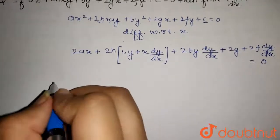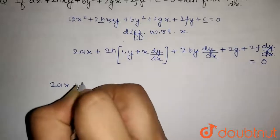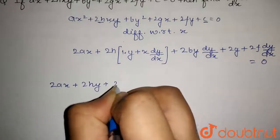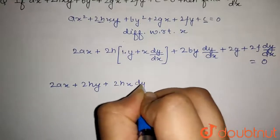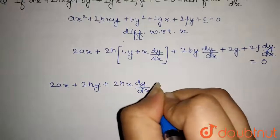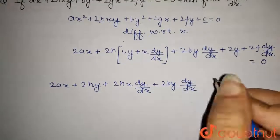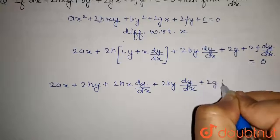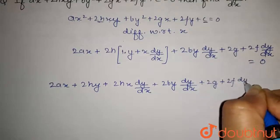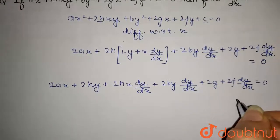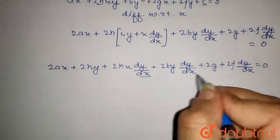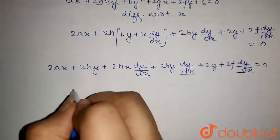When simplifying this expression, we get 2ax plus 2hy plus 2hx dy by dx plus 2by dy by dx plus 2g plus 2f dy by dx equals 0. Taking dy by dx common from these three terms,